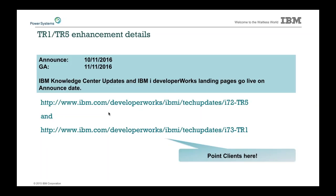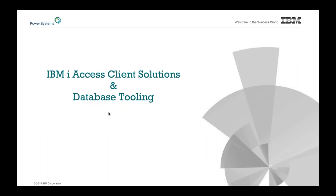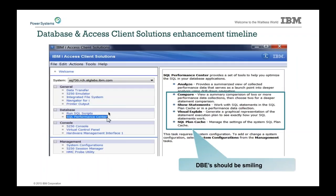Some of the things we've done for database tooling: there were things delivered earlier this summer in Access Client Solutions, finally announced in this October announcement. Your database engineer should have quite a lot of useful information now already available in the ACS M6 delivery.